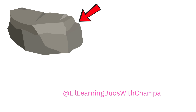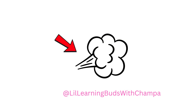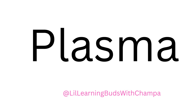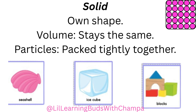Matter comes in three forms: solid, liquid, and gas. Actually, there is a fourth form as well, which is called plasma — but for this age, it's not required. We can say like this: everything around us is made of matter.